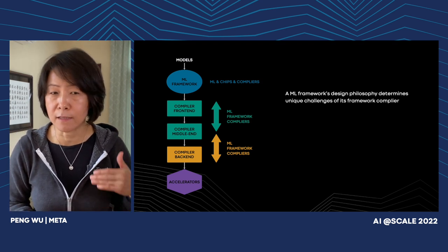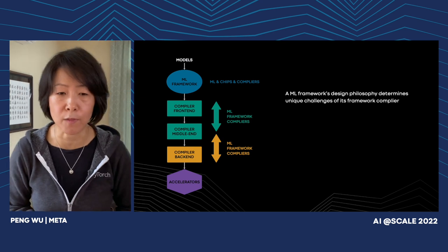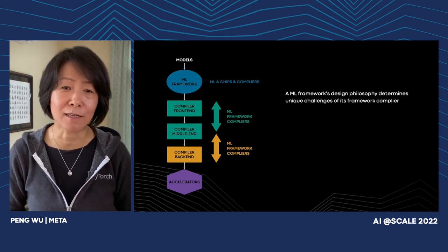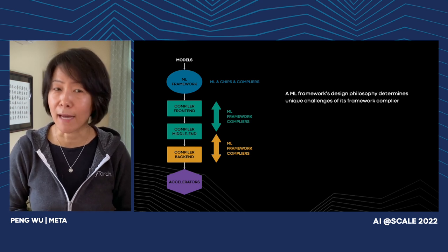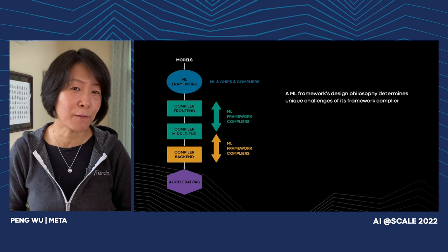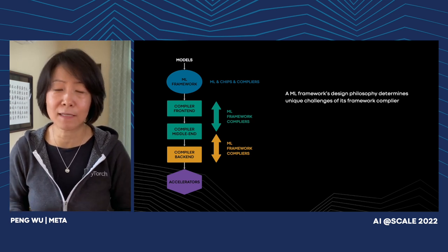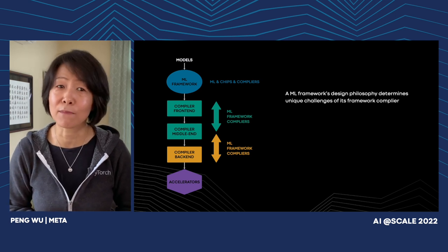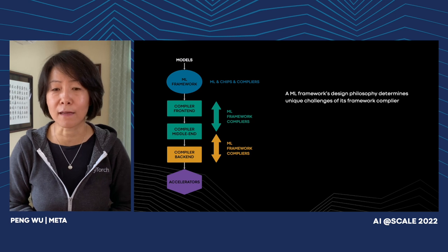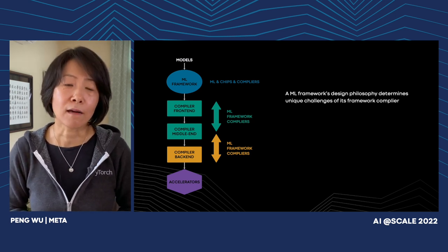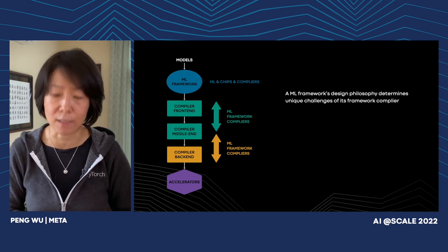The ability to have a smooth pathway is the most important thing. Unlike other machine learning frameworks, PyTorch is actually not designed with compilers or graphs in mind. This is why what makes PyTorch beloved — its flexibility and eager mode execution — is actually making it really, really hard to compile. As a framework compiler, a lot of our challenges were really caused by the design principles of the corresponding machine learning framework.